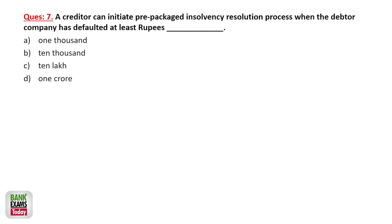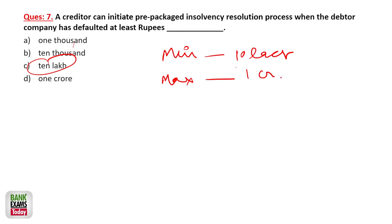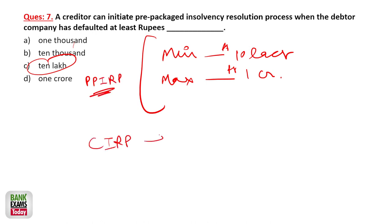A creditor can initiate the Pre-Packaged Insolvency Resolution Process when the debtor company has defaulted on at least 10 lakh rupees. The minimum is 10 lakhs and the maximum is 1 crore for PPIRP. Under CIRP, the minimum default should be rupees 1 crore. Please remember that — this is itself a very important question.